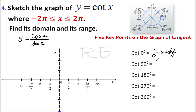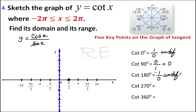Cotangent 90 is cosine 90 — which is zero — over one, which is zero. So cotangent 90 is zero. Cotangent 180 will be cosine 180, which is negative one, over sine 180, which is zero — undefined. Vertical asymptote.